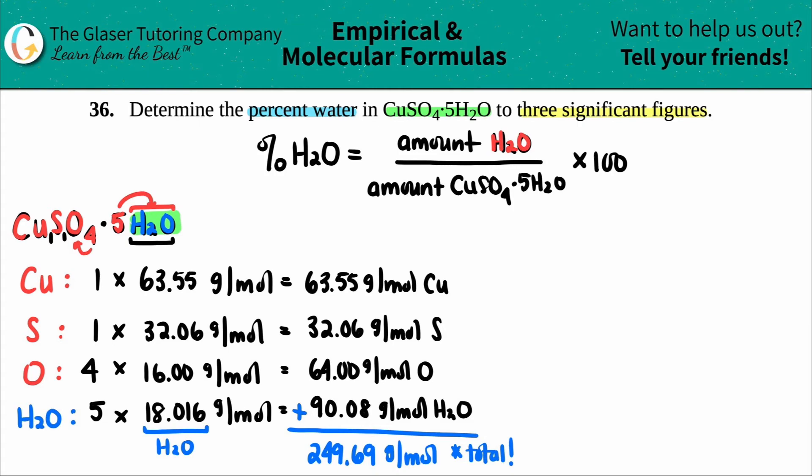Let's find out that percent water. Percent water equals the amount of water, the total amount of water, which we said was right here. It's the 90.08, right? So it's 90.08 divided by the total molar mass of the whole compound, which was 249.69. When I do my math, I don't like to put any units in here. I just like to make sure that I have the right units. And then I know that I don't have to put the units in the formulas. And this is times by 100.